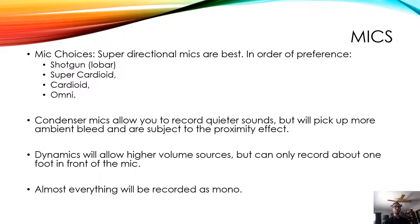Mic choices — super directional is best and in order: shotgun or low-bar pattern, followed by super cardioid, cardioid, and then omni. Do not use omni unless you have no other choice. Condenser mics allow you to record quieter sounds but will pick up more ambient bleed and are subject to the proximity effect. Dynamics will allow higher volume sources, or indoors can pick up quiet sources very close to the mic, but can only record about one foot in front of the mic itself. And remember, everything you record will almost always be mono — not stereo — mono.